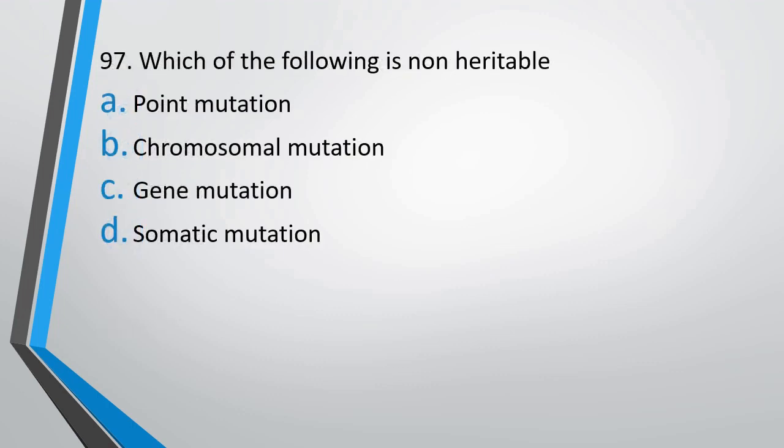Question number 97: Which of the following is non-inheritable — point mutation, chromosomal mutation, gene mutation, or somatic mutation? The correct answer is option D, somatic mutation.